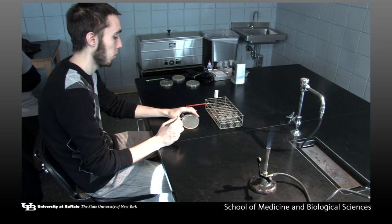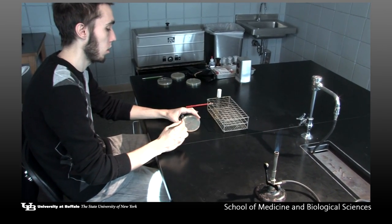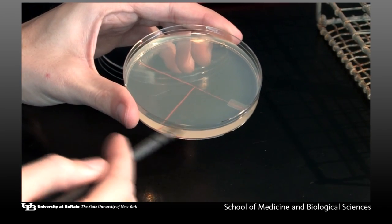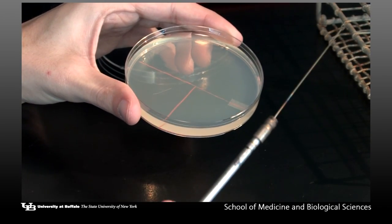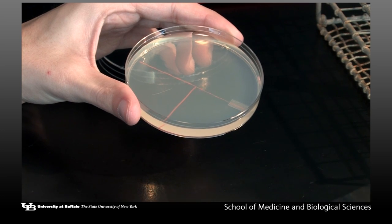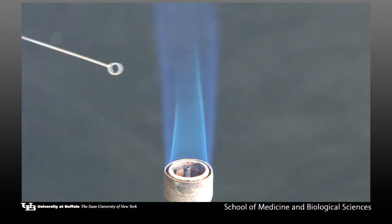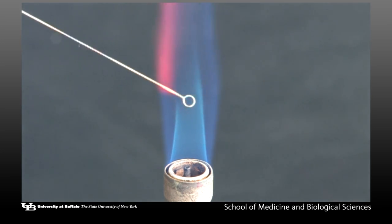Streak the mixed culture back and forth in the first section of the agar plate. Streaking is a light gliding motion. You do not want to cut into the agar surface with the loop. When the streaking is completed in the first section, flame the loop to sterilize the loop.